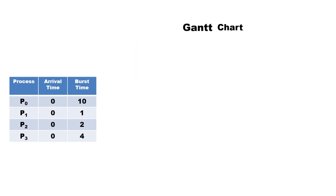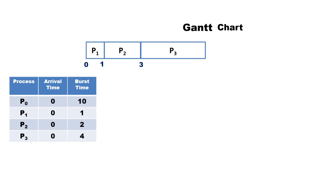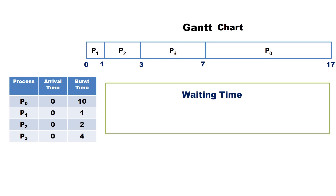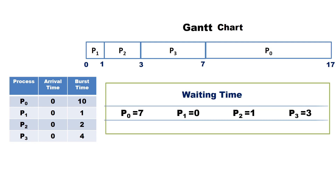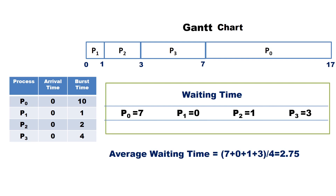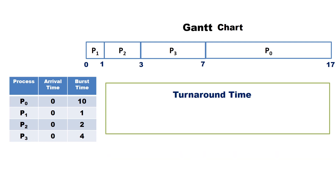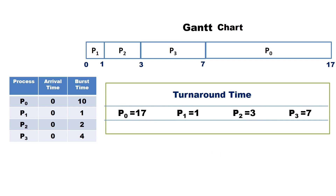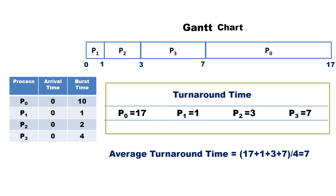Let us draw the Gantt chart for SJF. P1 starts at 0 and ends at 1, P2 starts at 1 and ends at 3, P3 starts at 3 and ends at 7, P0 starts at 7 and ends at 17ms. Waiting time: P0 = 7, P1 = 0, P2 = 1, P3 = 3. Average waiting time = (7 + 0 + 1 + 3) / 4 = 2.75. Turnaround time: P0 = 17, P1 = 1, P2 = 3, P3 = 7. Average turnaround time = (17 + 1 + 3 + 7) / 4 = 7.